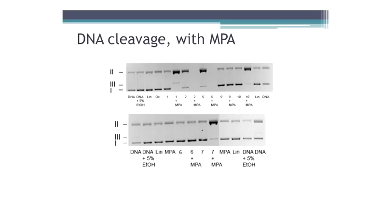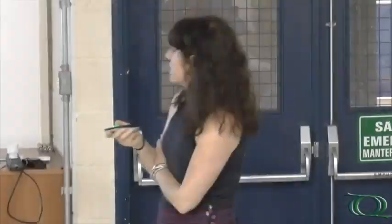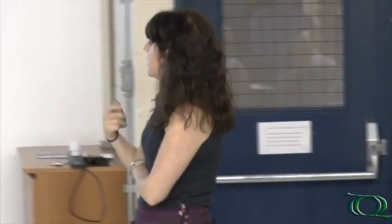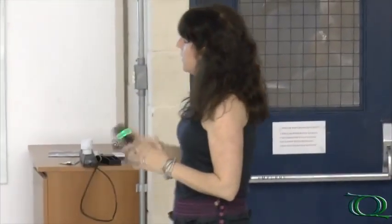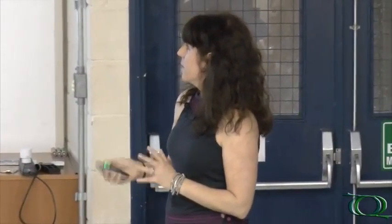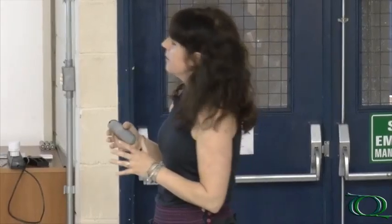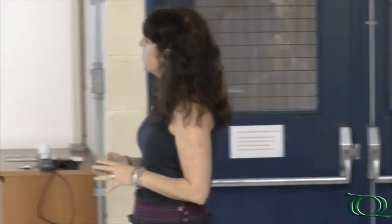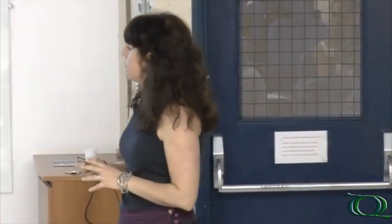For complex 1, we do not see supercoil DNA anymore. Almost the same happens with vanadium complex 10 and vanadium complex 7. So what we can see is that we really need activating agents to have some DNA cleavage in the presence of this type of complexes.